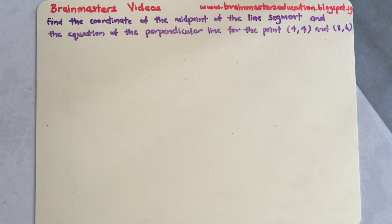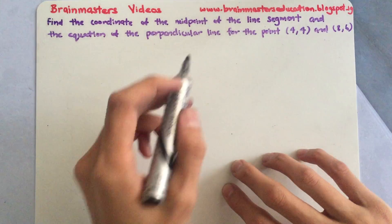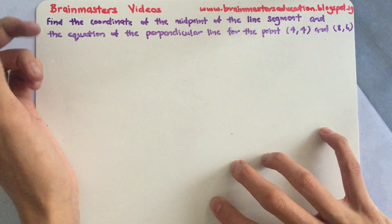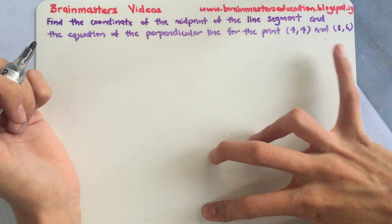Find the coordinate of the midpoint of the line segment and the equation of the perpendicular line for the points (4,4) and (8,6). So first they're asking for the coordinates of the midpoint. How do we find our midpoint? Since we have two points here, (4,4) and (8,6).